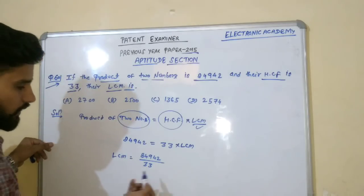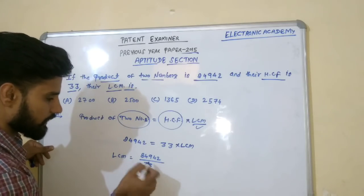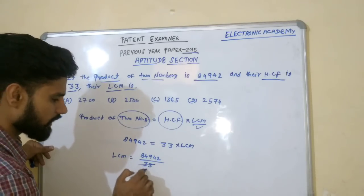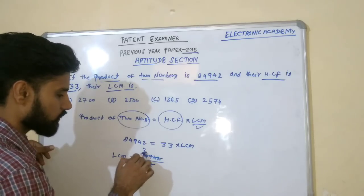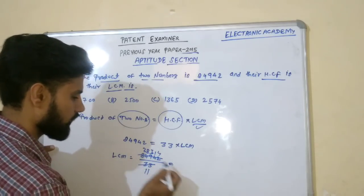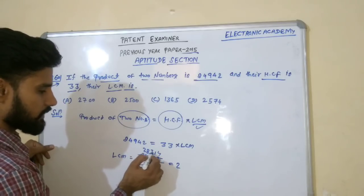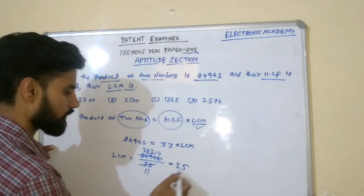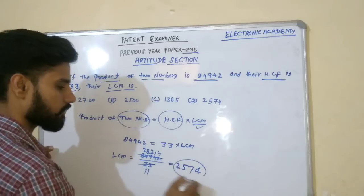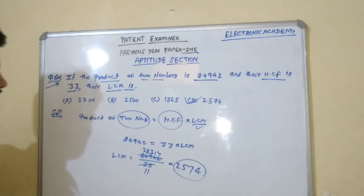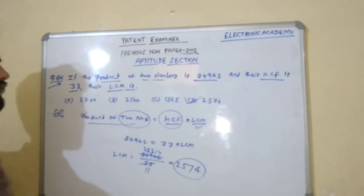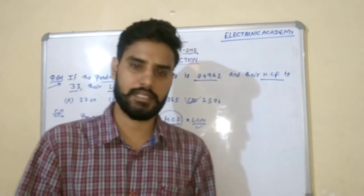When we divide 84942 by 33, we get 2574. So the LCM of the two numbers is 2574.